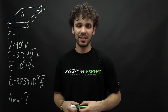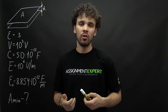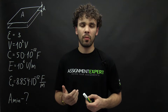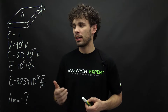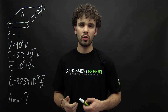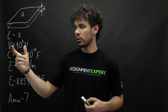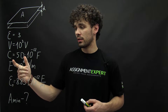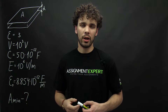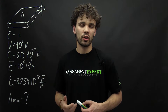Hi guys, this is Simon Expert. Imagine that you're designing a parallel plate capacitor from a material with dielectric constant 3, and this capacitor should operate with these parameters. We have voltage, capacitance, and electric field strength. What is the minimum area of plates required to build such a capacitor?